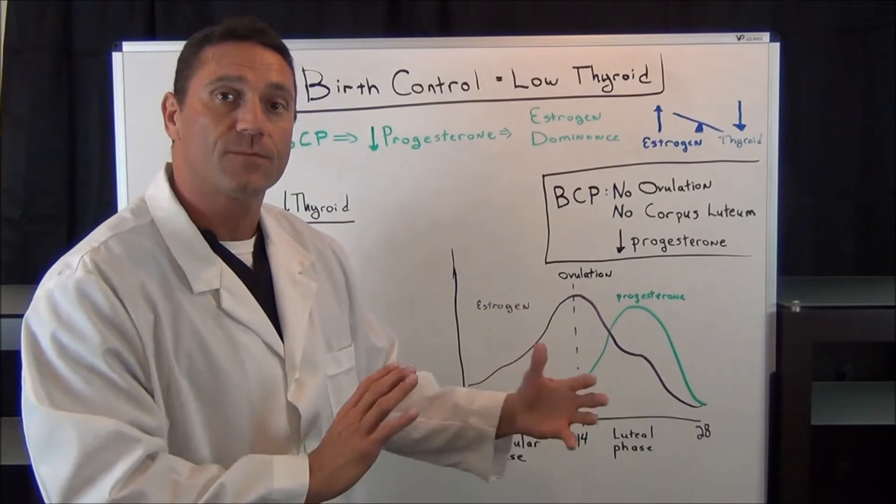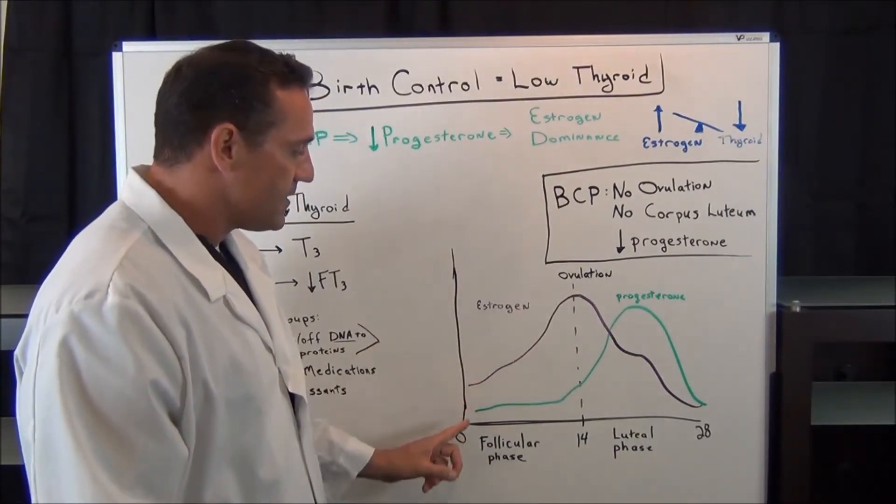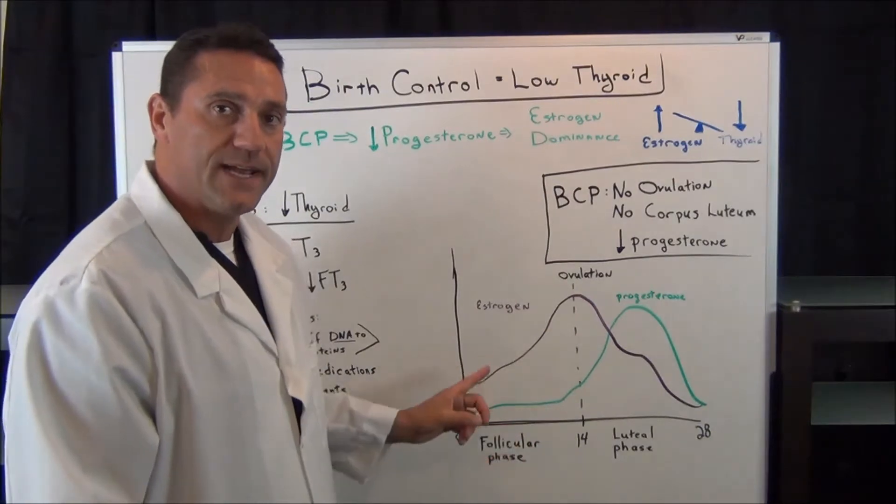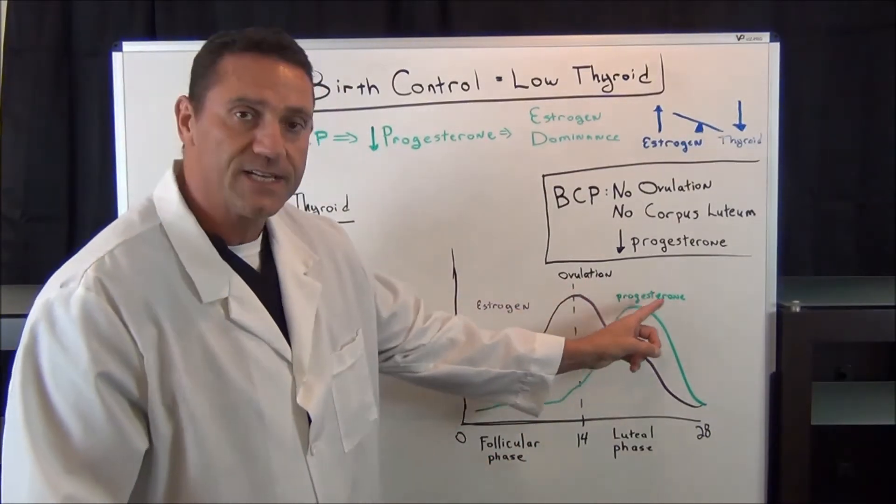Then the egg turns into what's called the corpus luteum. And you can see on this chart here how the first half of the menstrual cycle, you're going to be estrogen dominant. And the second half of the cycle, you're going to be progesterone dominant.